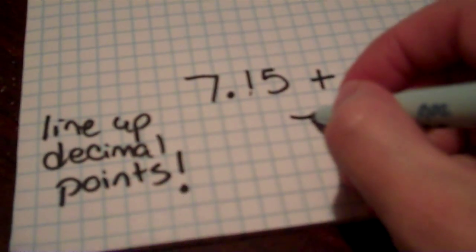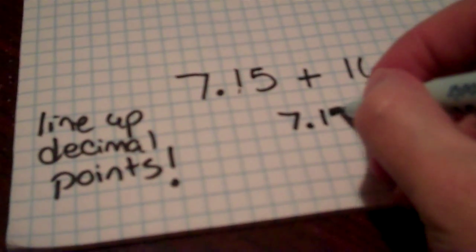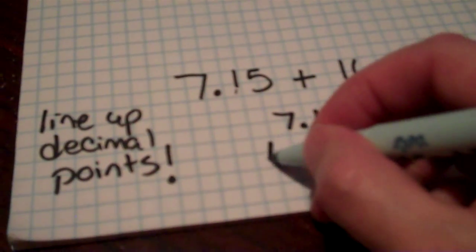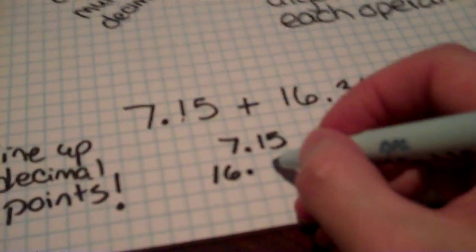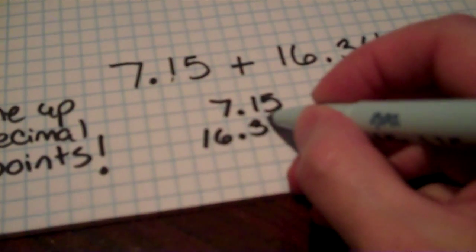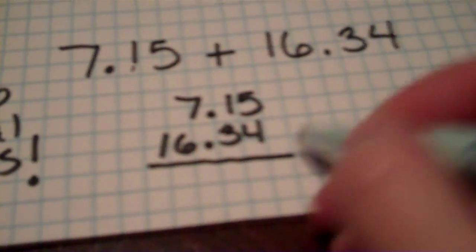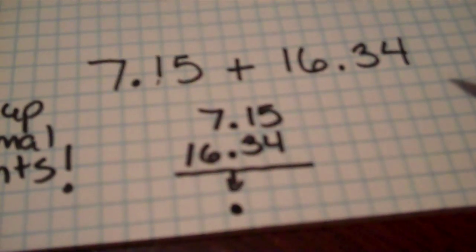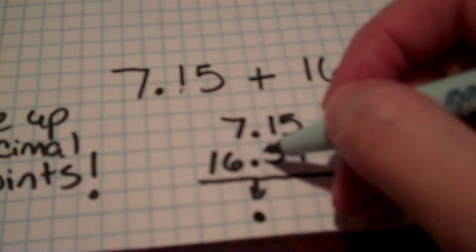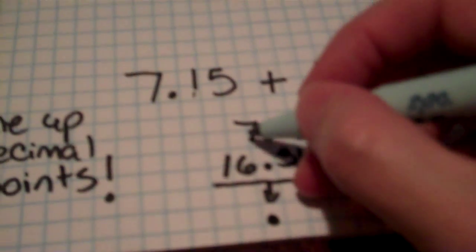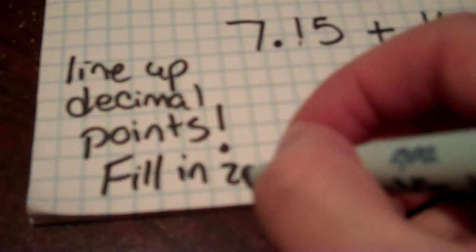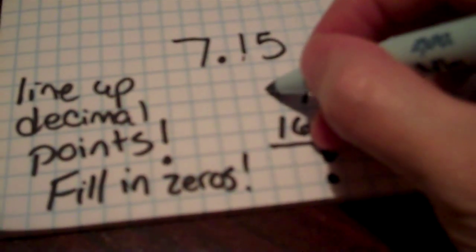So we're going to write it vertically, which means we're going to write it one on top of the other. So I'm going to take 7 and 15 hundredths and I'm going to put it over 16 and 34 hundredths. Notice that I lined the decimal point up. All we're going to do is we're going to drop that decimal point down. Now I've got a 5 above a 4, a 1 above a 3, a decimal on top of a decimal, a 7 upon a 6, and then I don't have anything over this 1. So the next thing I want you to do is I want you to fill in any spaces with zeros. So I'm going to put a zero right here.